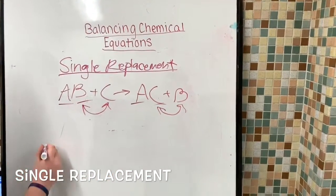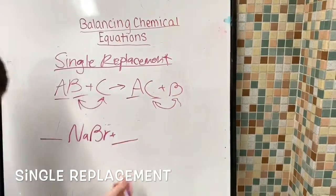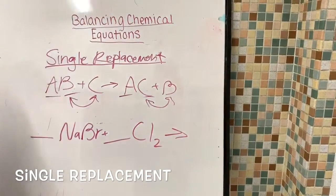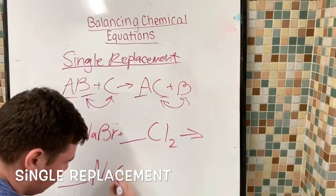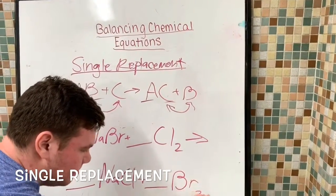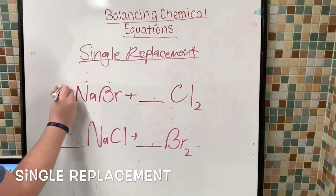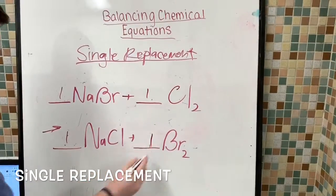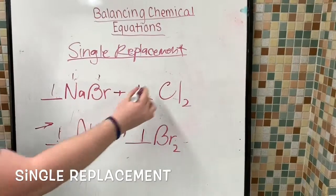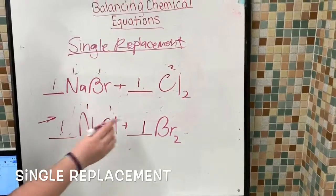An example of this can be seen in NaBr plus Cl2 gives you NaCl plus Br2. So to start off you can place a one before each compound and then from that you can then count how many there are. On this Na there's only one, this Br has one, this Cl has two, this Na has one, that Cl has one, and this Br has two.